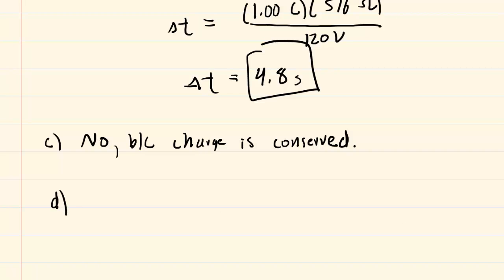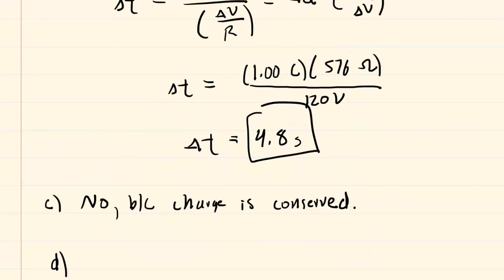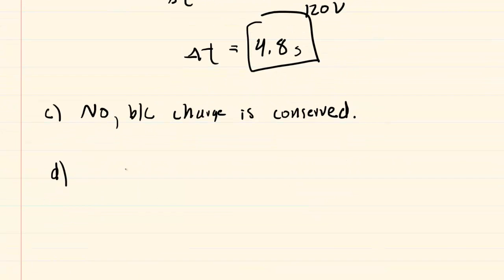Moving on to part D, we are asked in what time interval does one joule pass into lightbulb A? Now, joule is a unit of energy. And we recall that there is a nice relationship between power, energy, and time interval, given as follows.